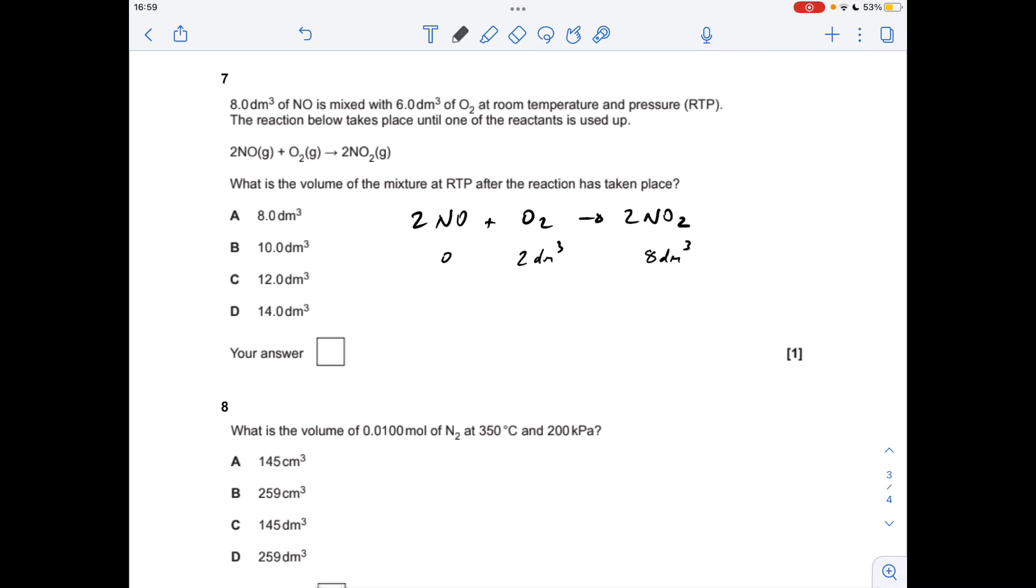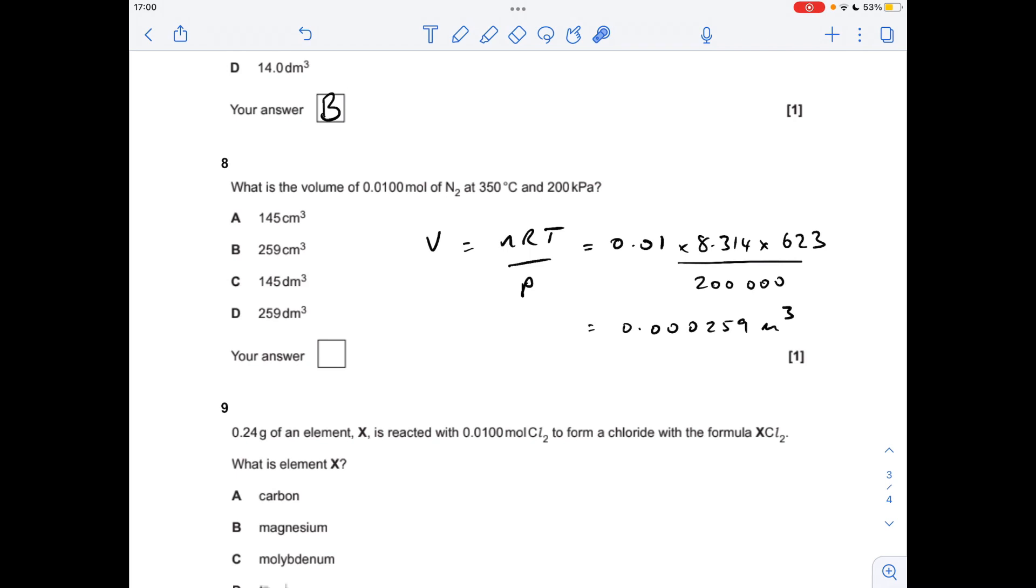Number eight. We've got to use the ideal gas equation to get the volume of nitrogen, so that comes out at 0.000259 meters cubed. Remember that's the volume for the ideal gas equation. So we've got basically, is it B or is it D? If we multiply this by a thousand it'll get it into decimeters cubed, so that's not right, it's got to be B. If you multiply this by a thousand to put it into centimeters cubed, you will indeed get 259, so the answer was B.